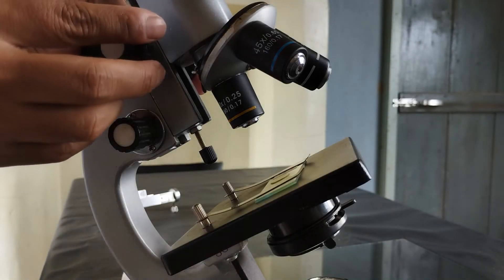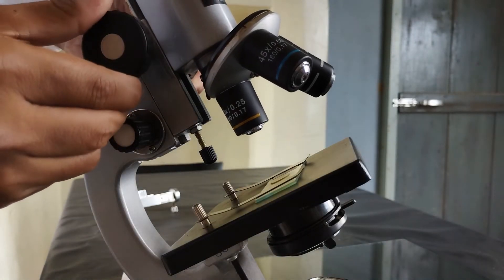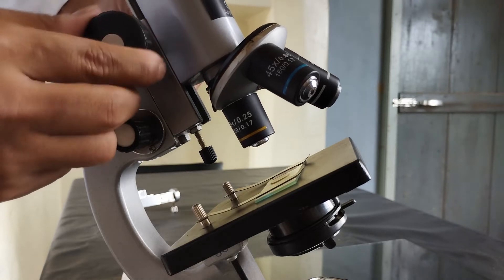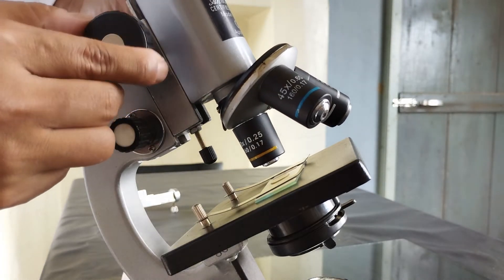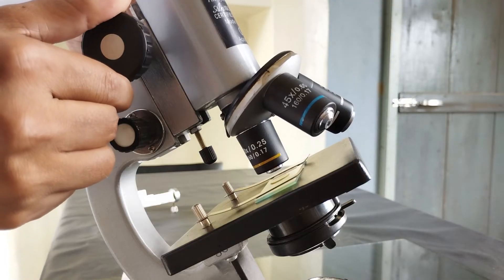Once you have centered the specimen, slowly and carefully lower the objective lens using the coarse adjustment knob until it almost touches the surface of the slide or the cover glass.